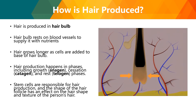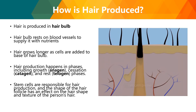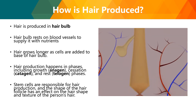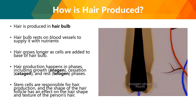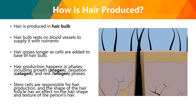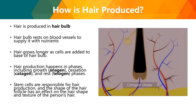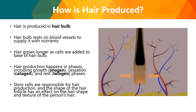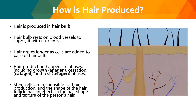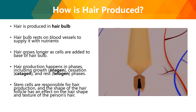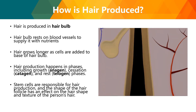Hair is produced in the hair bulb, which rests on blood vessels that supply it with nutrients. Hair grows longer as cells are added to the base of the hair bulb. Hair production happens in different phases: the growth phase (anagen), the cessation phase (catagen), and the resting phase (telogen). Stem cells are responsible for hair production, and the shape of the hair follicle affects the shape and texture of the hair.